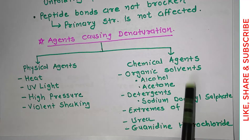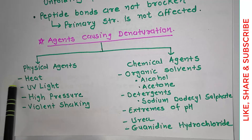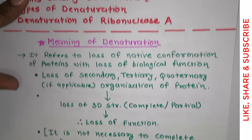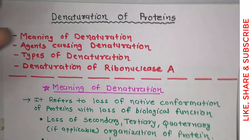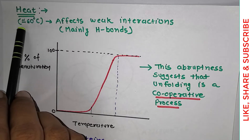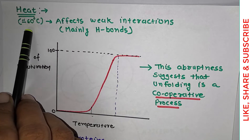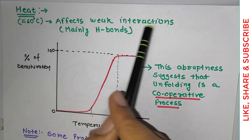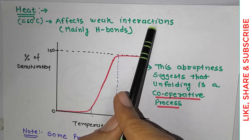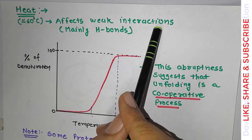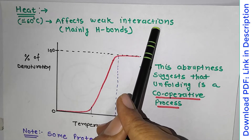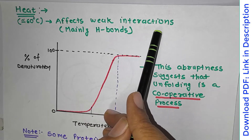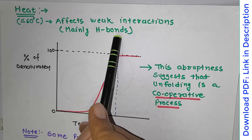Out of all denaturing agents, heat is the most important and most interesting one. Heat, at approximately around 60 degrees Celsius, affects weak interactions in the protein. We know there are many weak interactions in secondary, tertiary, and quaternary structure — hydrogen bonds, hydrophobic interactions, electrostatic interactions, and van der Waals forces. But out of all these, heat mainly affects hydrogen bonds.